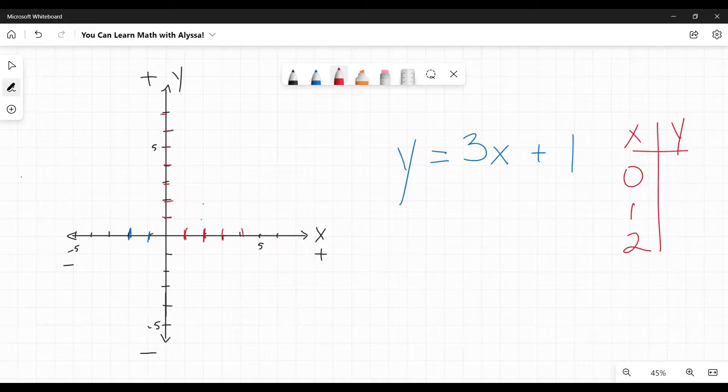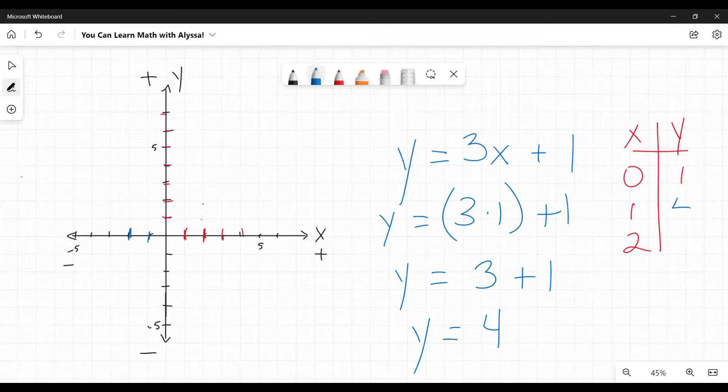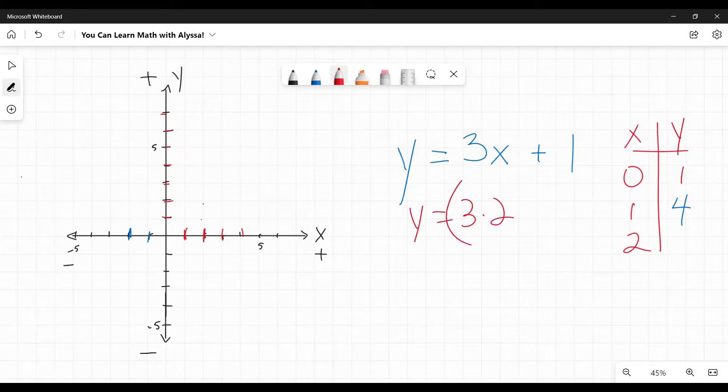Well, y equals 3x plus 1. So first I'm going to plug in 0. 3 times 0 plus 1. 3 times 0 is 0, plus 1 is just 1. So y would equal 1 when x is 0. How about when x is 1? 3 times 1 plus 1. 3 times 1 is 3, plus 1 is 4. So when x is 1, y is 4. And then if x is 2, y is equal to 3 times 2 plus 1. 3 times 2 is 6. y is equal to 6 plus 1 or 7.